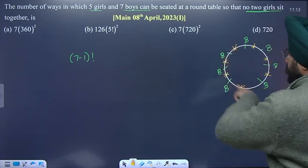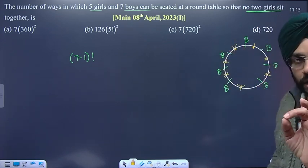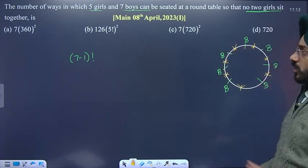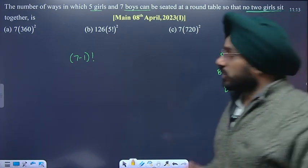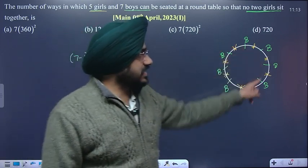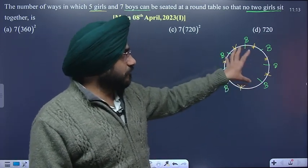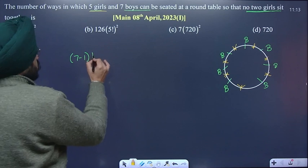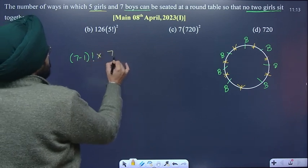In seven gaps, you will place girls at any place, but they will not be together. So we have five girls and seven places. In seven, you will choose five places and arrange them, so you will have 7P5.